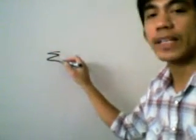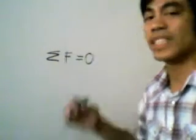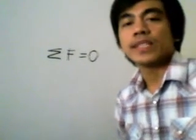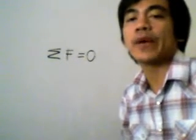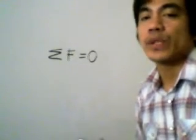Hi guys, today we are going to discuss equilibrium of a particle. We are going to focus on static equilibrium, which means we are dealing with objects at rest. This requires satisfying Newton's first law — all forces acting on the object at rest should equal zero. In simple terms, we write summation of forces equals zero. We will first introduce the concept of the free body diagram, then show how to solve particle equilibrium using the equations of equilibrium.